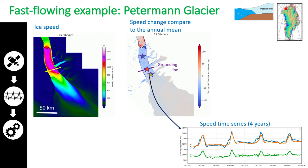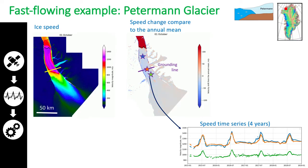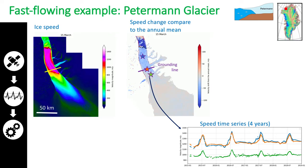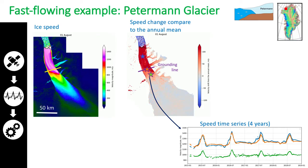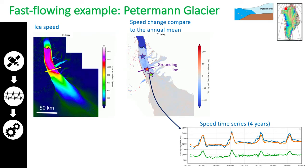Here is an example of what we can get when a combination of sensors is used. This is the fast-flowing Petermann Glacier, located in the far north of Greenland. On the top, there are maps of seasonal speed behavior with two-week time steps — absolute speed on the left and the deviation from the annual mean on the right. On the bottom, there is a time-speed series. Thanks to the high temporal resolution of our final data, the seasonal dynamics can be widely investigated in time and space.